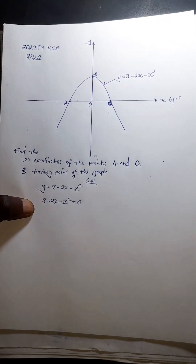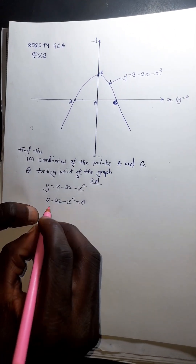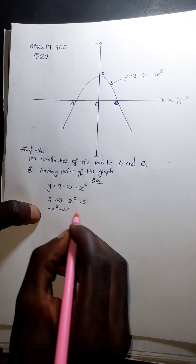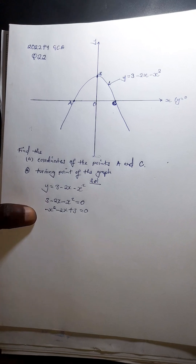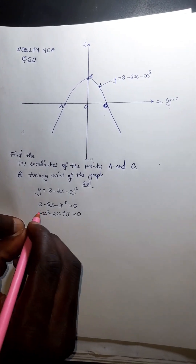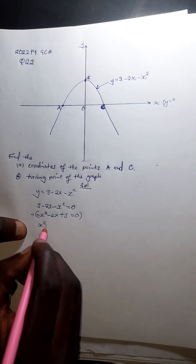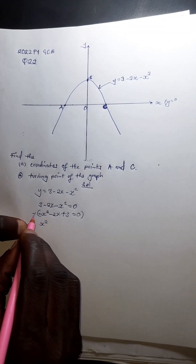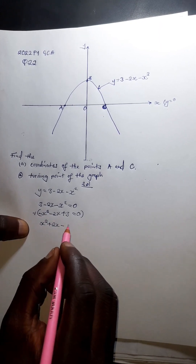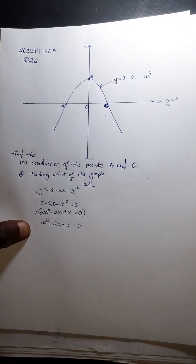Arranging the equation nicely, starting with x²: −x² − 2x + 3 = 0. We multiply throughout by −1 to get rid of the leading negative, giving us x² + 2x − 3 = 0.